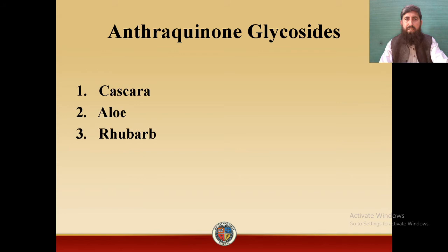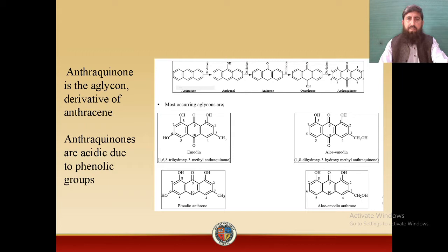Anthraquinone Glycosides include the following crude drugs: first, Cascara; the second drug is Aloe; third one is Rhubarb; fourth one is Cochineal; and the last one is Senna, which is also known as Sanamaki in Urdu.